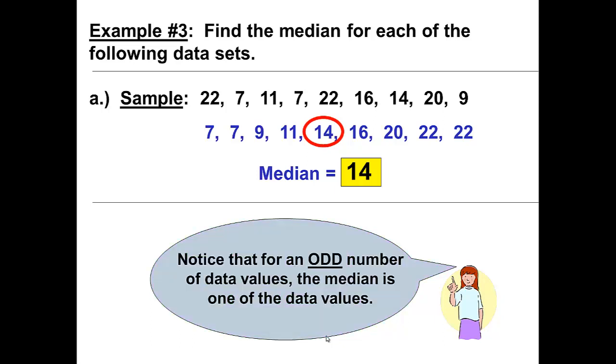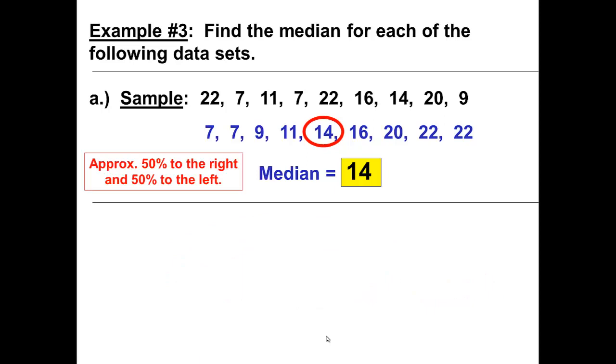Notice that for an odd number of data values the median is one of the data values. And we have approximately fifty percent to the right and fifty percent to the left.